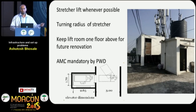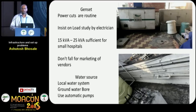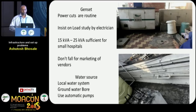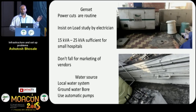You can't stop the lift from working. AMC is mandatory for lifts as per PWD departments, and these facts are very less known. Power cuts are very routine, so gensets are a must — but insist on load studies done by an electrician. Around 15 to 25 kVA is sufficient for small rural hospitals. Don't fall for vendor marketing claiming you need 80 or 100 kVA — get your load study from your electrician.